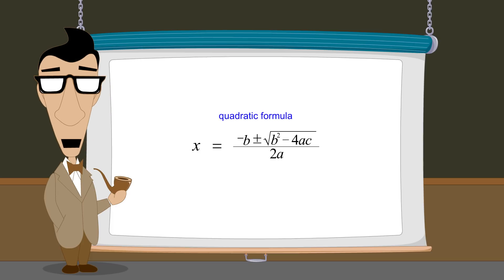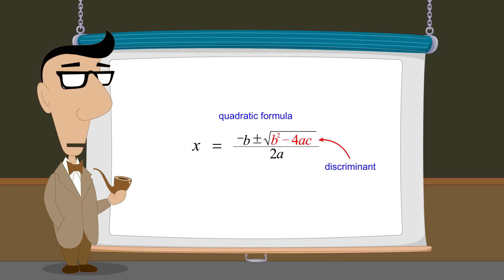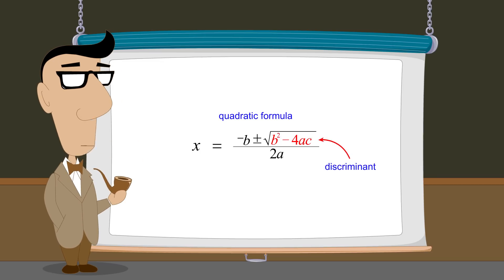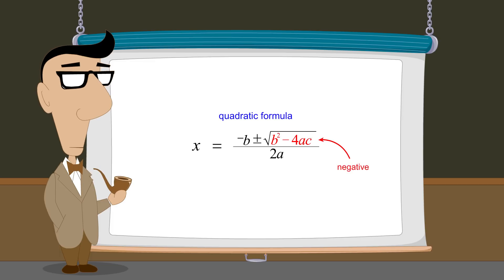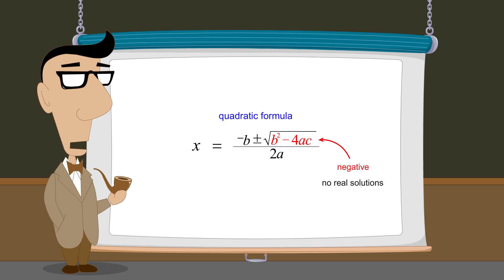We also saw that an expression within this formula called the discriminant indicates the type of solutions that exist for that equation. In particular, if the discriminant is negative, then the quadratic equation has no real solutions since no real number can be the square root of a negative quantity.